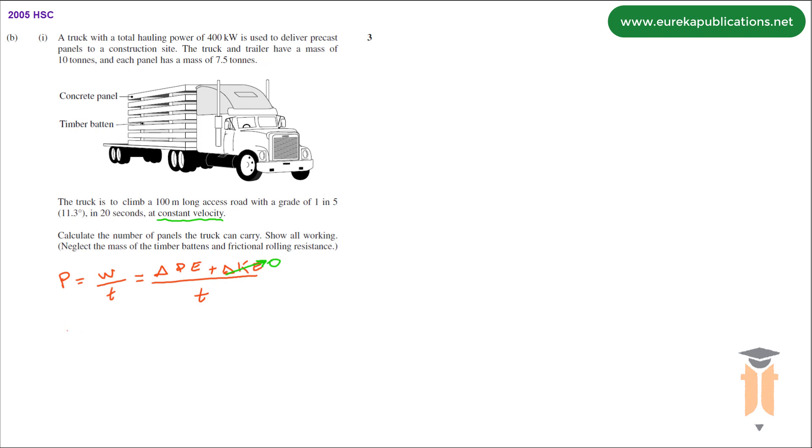Simplifying this equation we have power equals change in potential energy, which is MGH final minus MGH initial over time. Initially it was at ground level so our initial height is zero, so now I'm left with power equals MGH final over time.